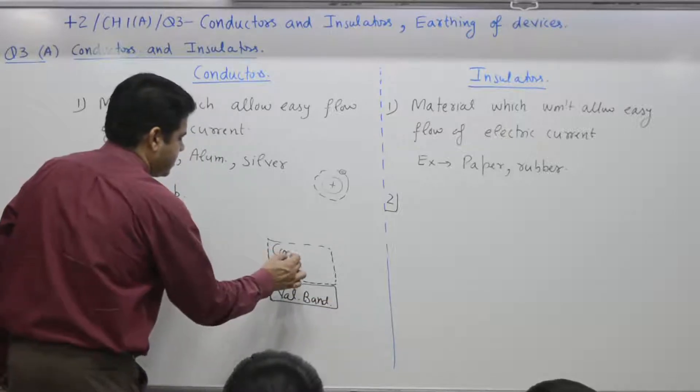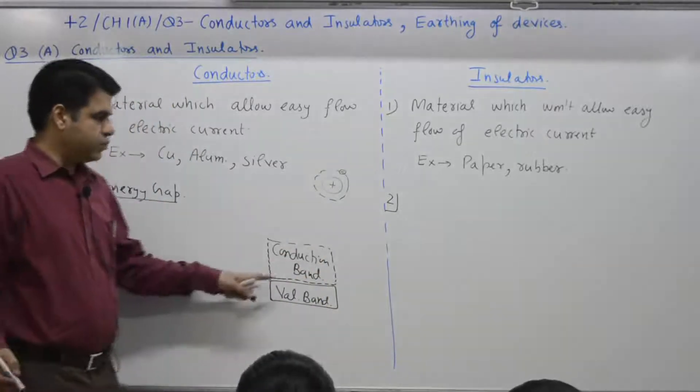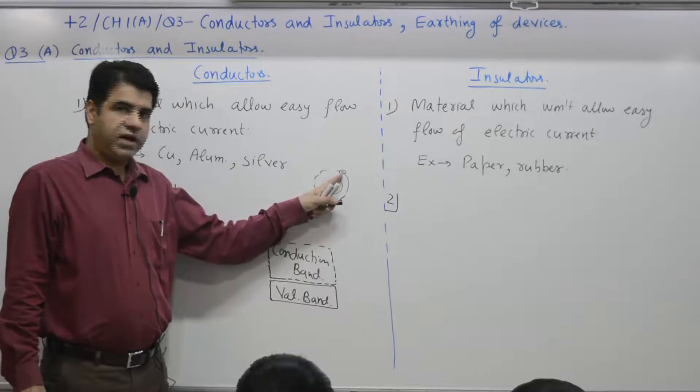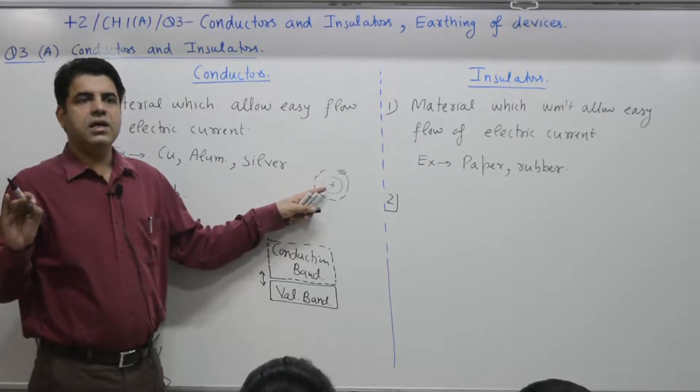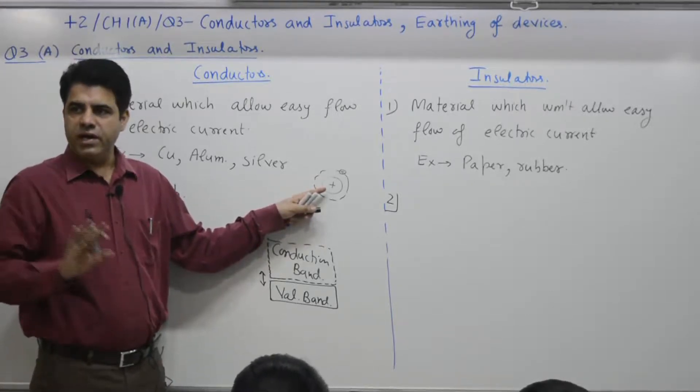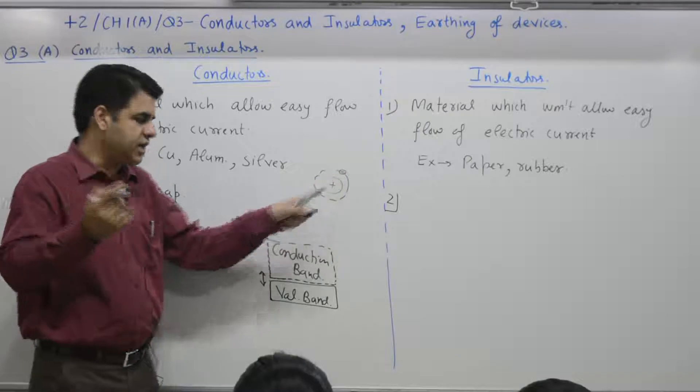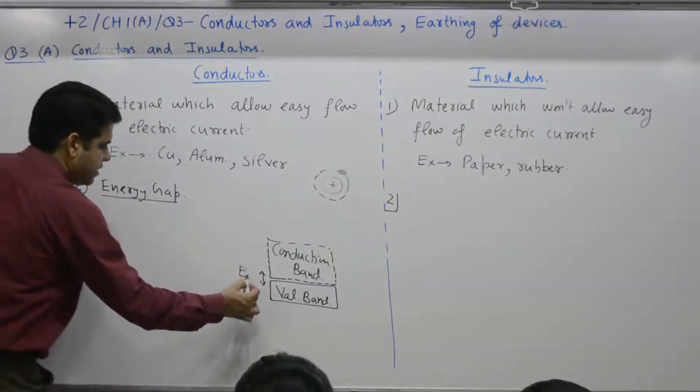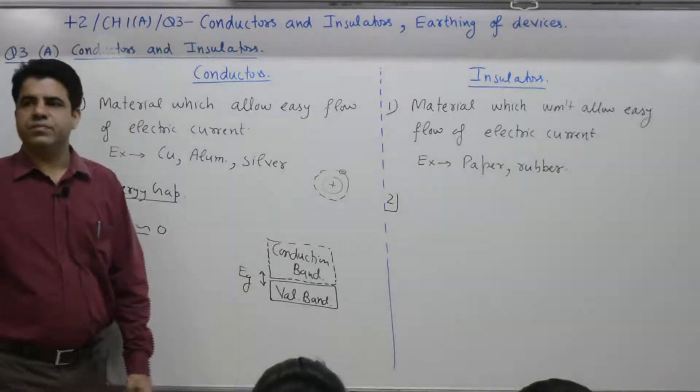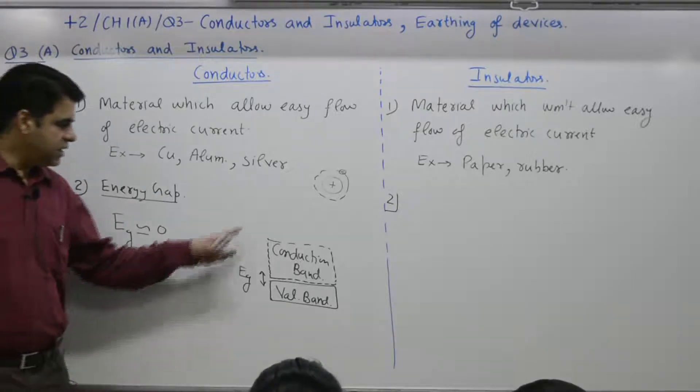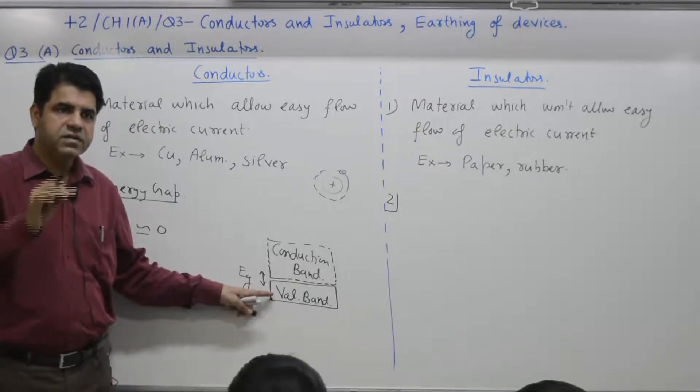Above this is conduction band. If you need one unit of energy to remove this, the gap is one unit. For metals at room temperature, almost zero amount of energy is required. Electrons are free - they can move from one atom to another. That's why this energy gap is very small, almost zero. This diagram represents valence band, meaning the electron is confined with the nuclei and belongs to a particular atom.